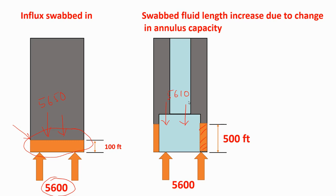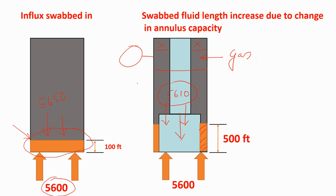After the round trip, you go to bottom, tag bottom, and circulate bottoms up first. During that pull out time there was a swab kick, and when you circulate and the swab kick comes to surface, if the influx is gas, it will expand. When gas expands it causes a reduction in BHP, ultimately resulting in a kick. When you shut in, there is no change in hydrostatic pressure in the drill pipe because the mud in the drill pipe equals the original mud weight. So there will be pressure in the annulus but no pressure in the drill pipe.